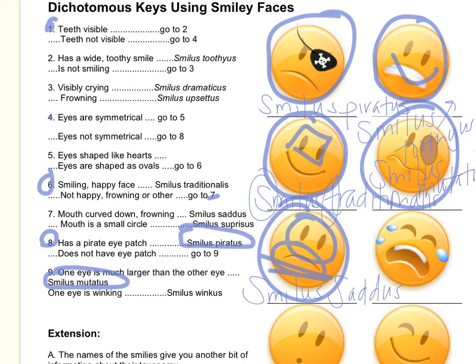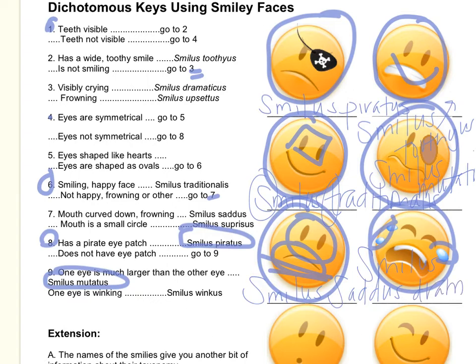Now we're going to do this guy. Teeth visible — yes. Go to two. Has a wide toothy smile? No. Is not smiling — yes. Go to three. Visibly crying? Yeah, that's definitely visibly crying. So he is Smilus dramaticus. Smilus dramaticus.